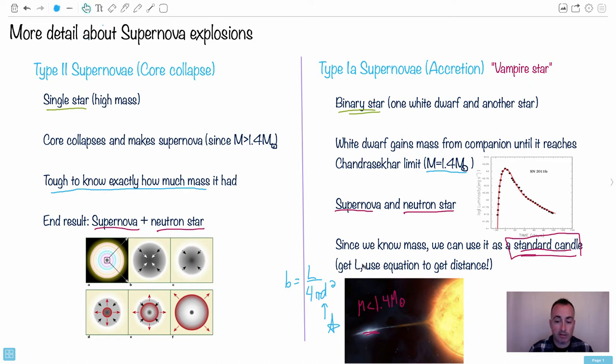So we can get the luminosity from that. We get the distance. And then we're happy because now we can know distances. That's why supernova Type Ia are really important. That's why scientists love finding them. We get really excited when we can see them.